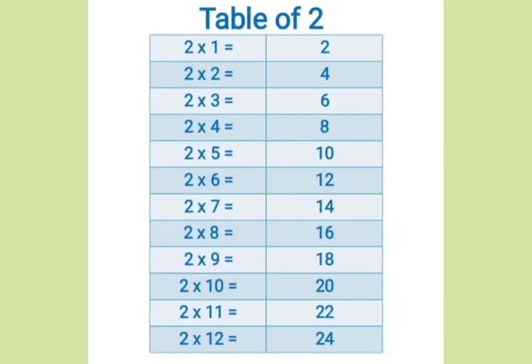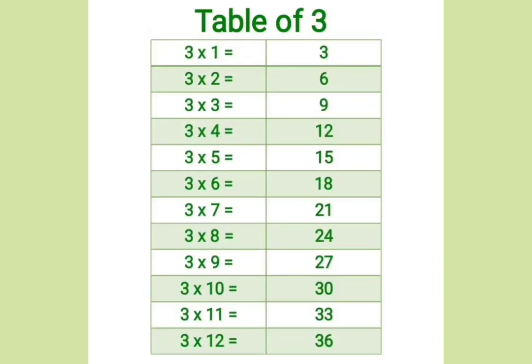Two ones are two, two twos are four, two threes are six, two fours are eight, two fives are ten, two sixes are twelve, two sevens are fourteen, two eights are sixteen, two nines are eighteen, two tens are twenty, two elevens are twenty-two, two twelves are twenty-four.